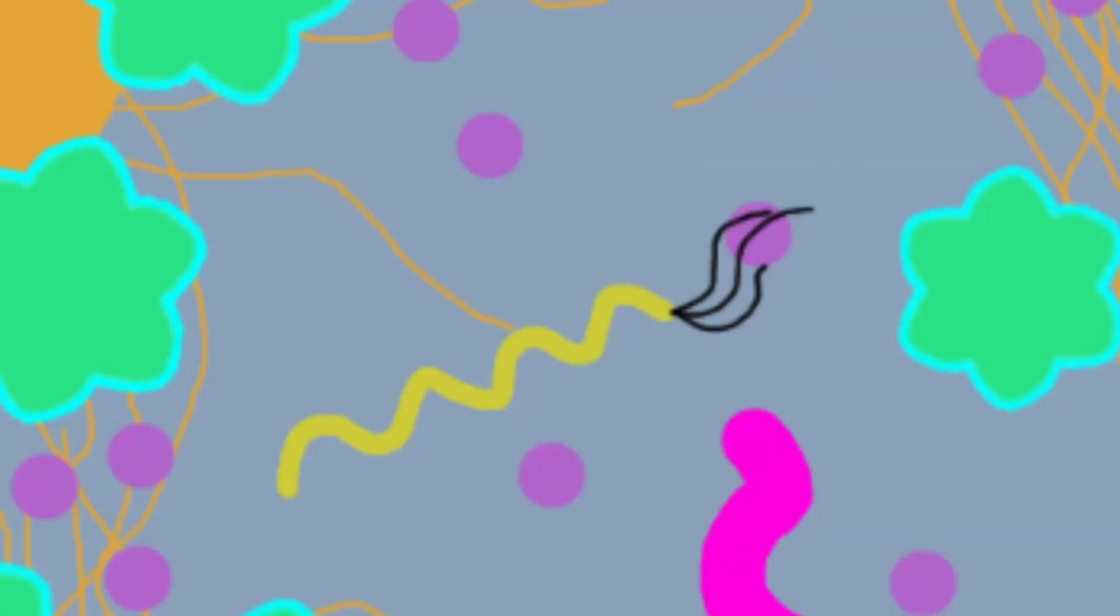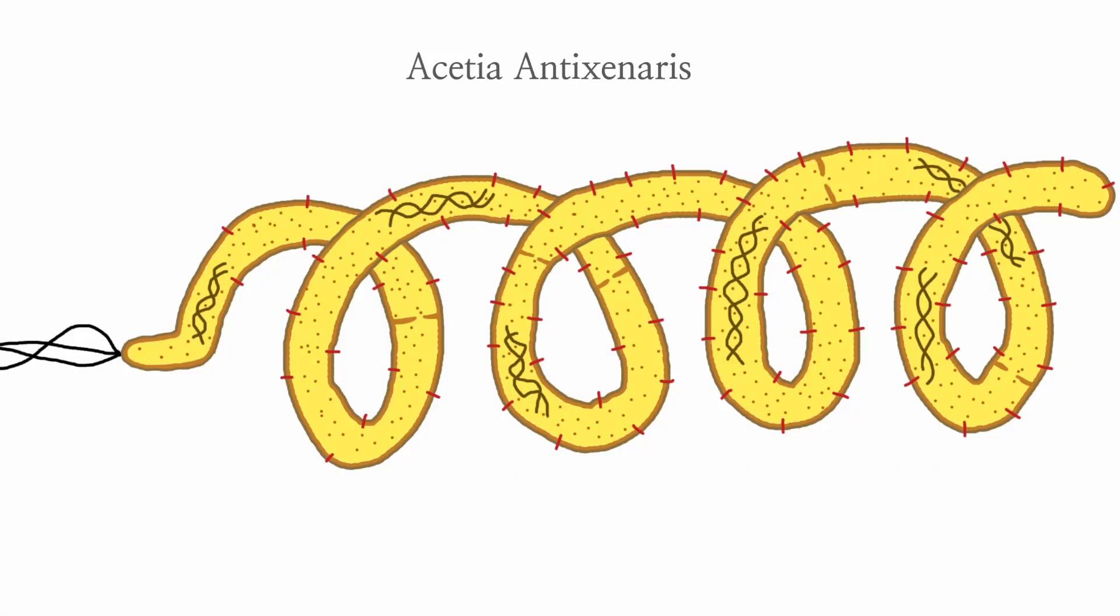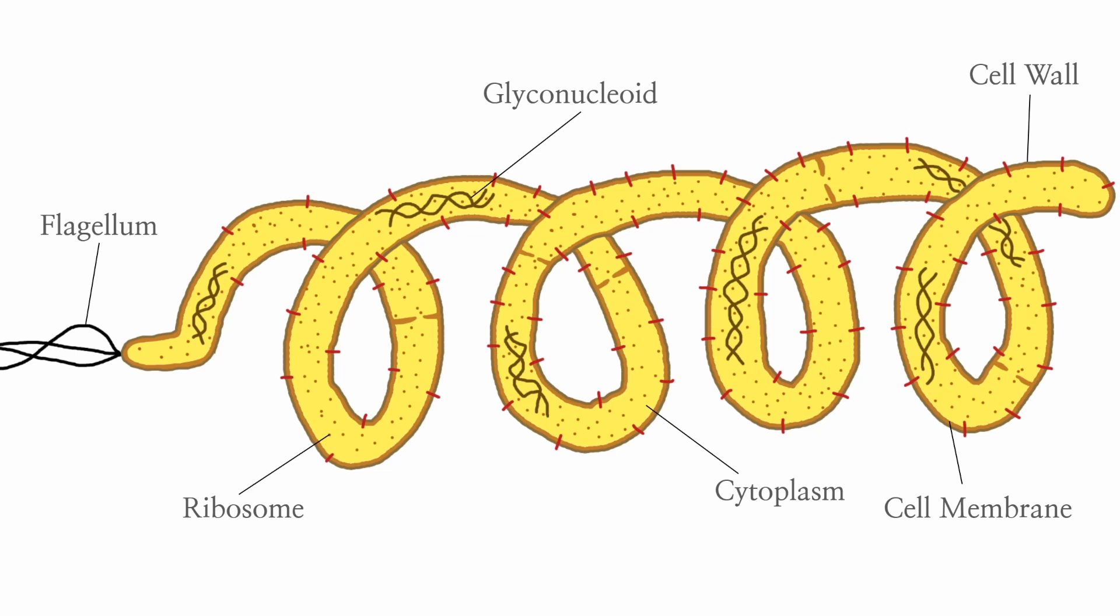These spiral-shaped microbes are the true guardians of the community. This is Acetia antizenares. It's an unusual-looking life form. It has no colosomes, despite being a silicozoid. But perhaps its most distinguishing feature are its multiple glycon nuclei, each living in their own cytoplasmic compartment, separated by infolded cell membranes called septa. Finally, you may notice that it possesses similar receptor sites to Acetia symbiotica. So, what can explain this bizarre mix of features?